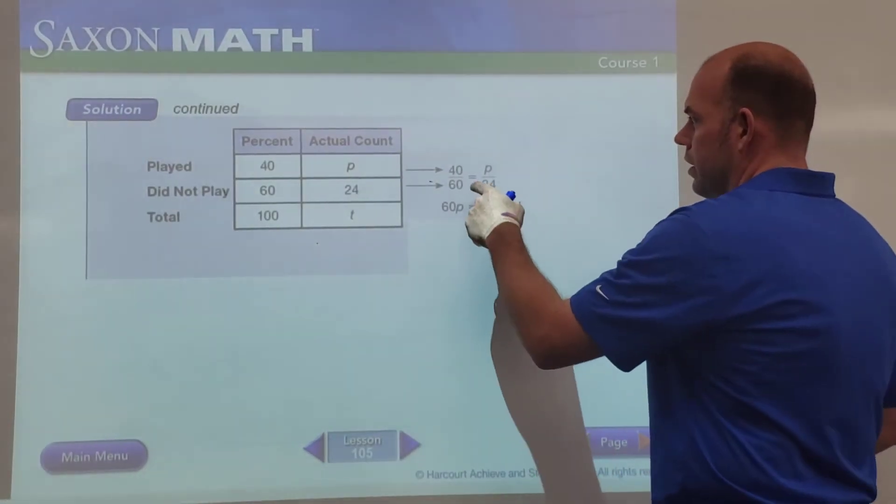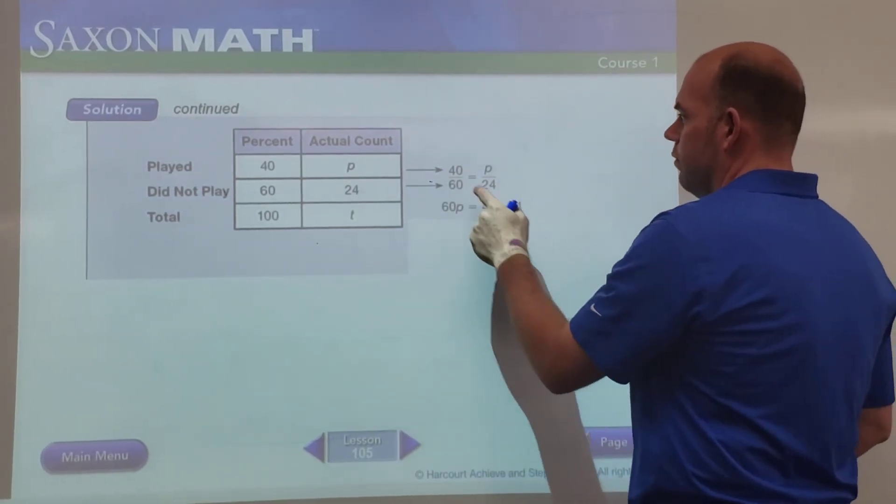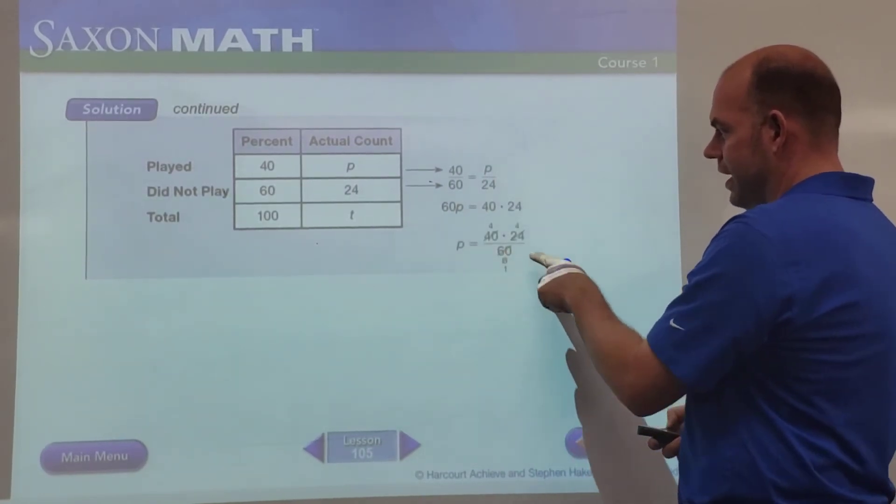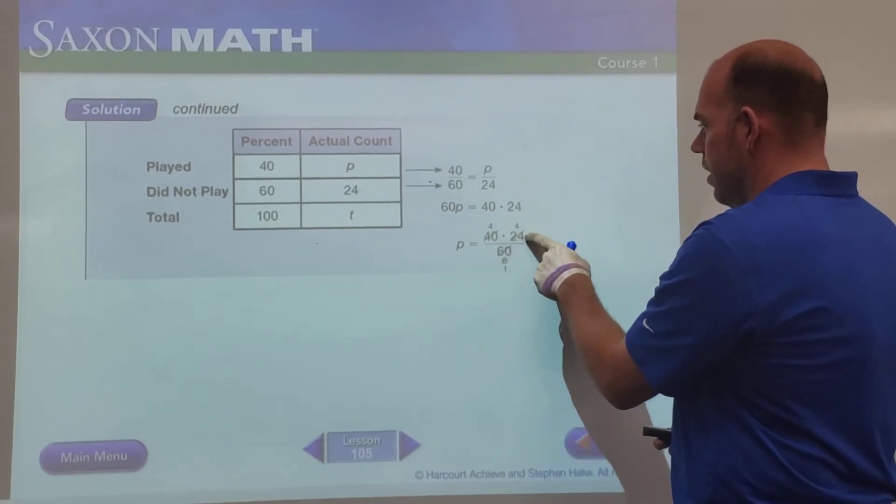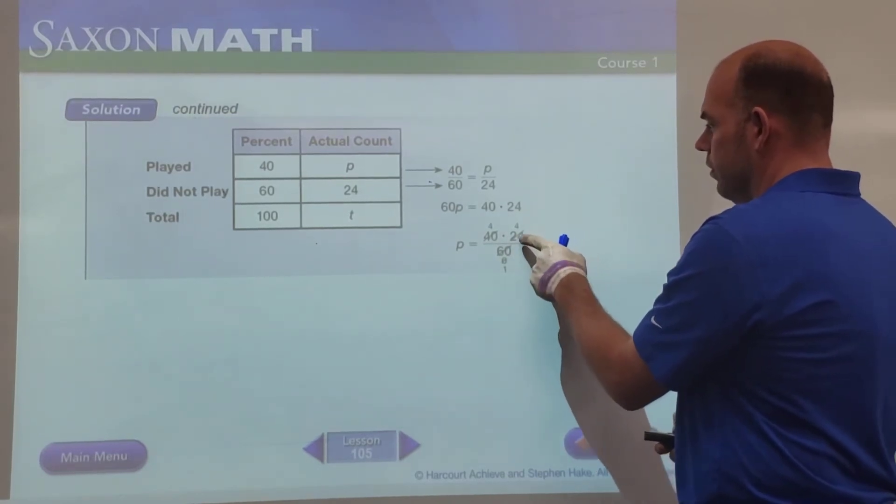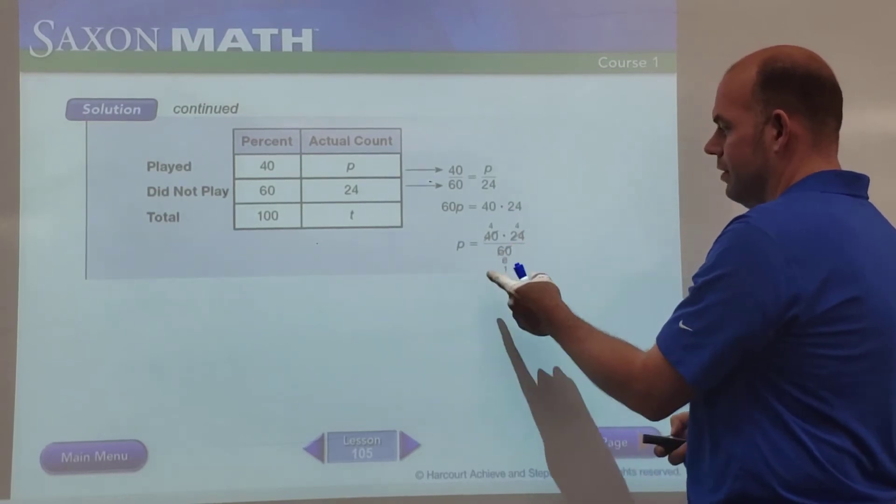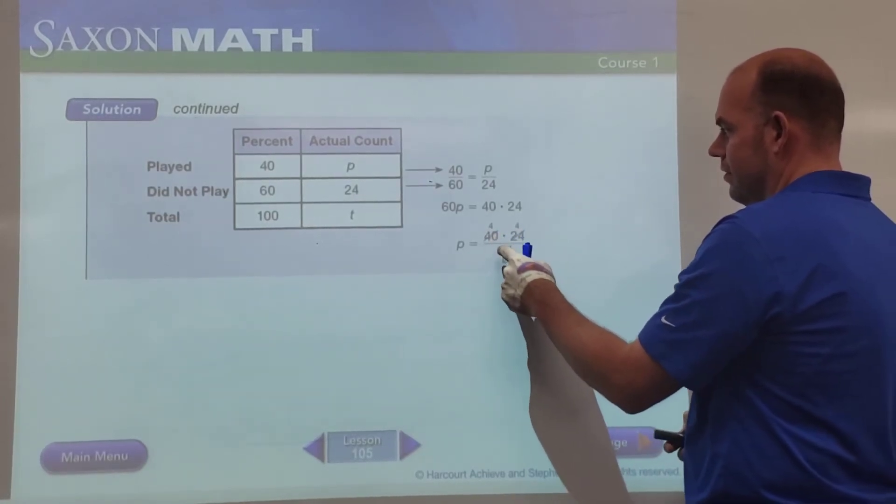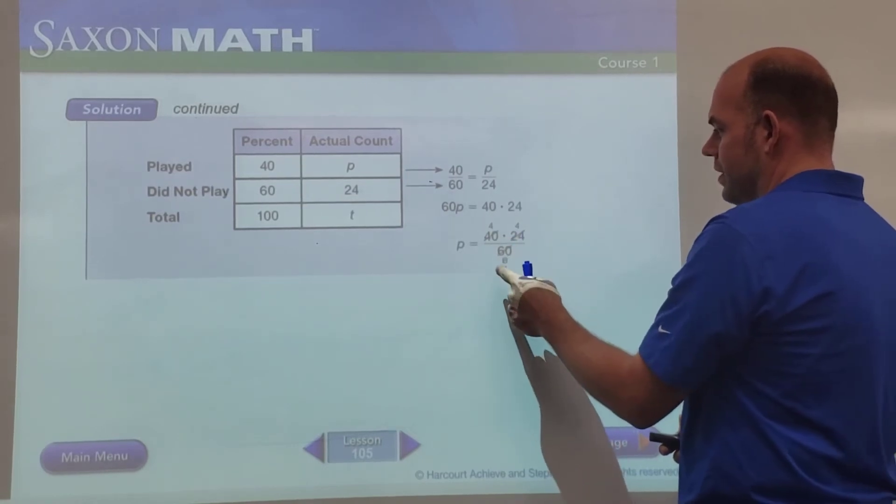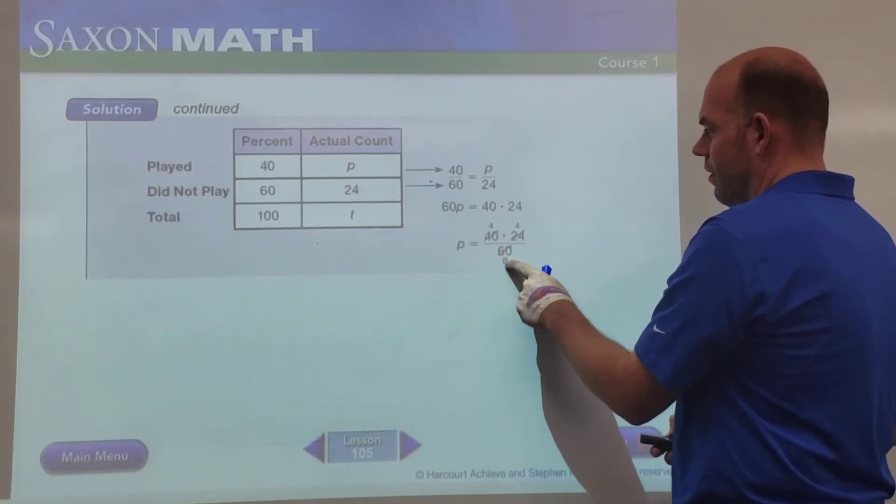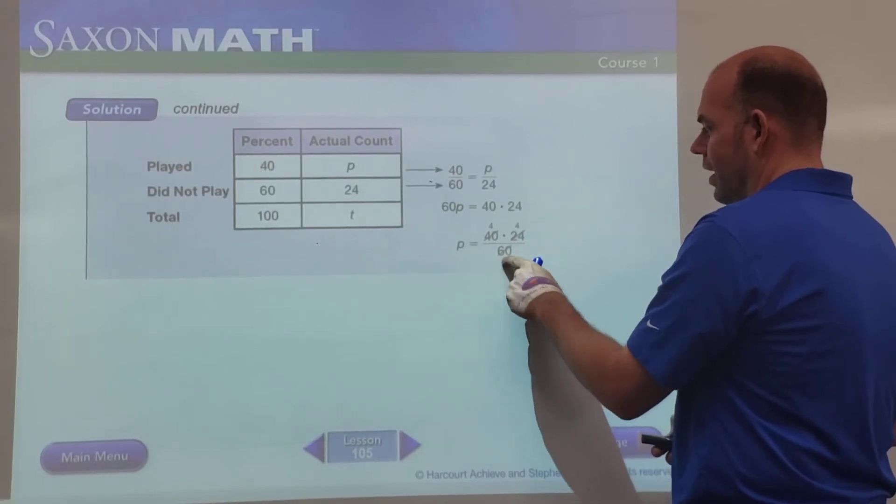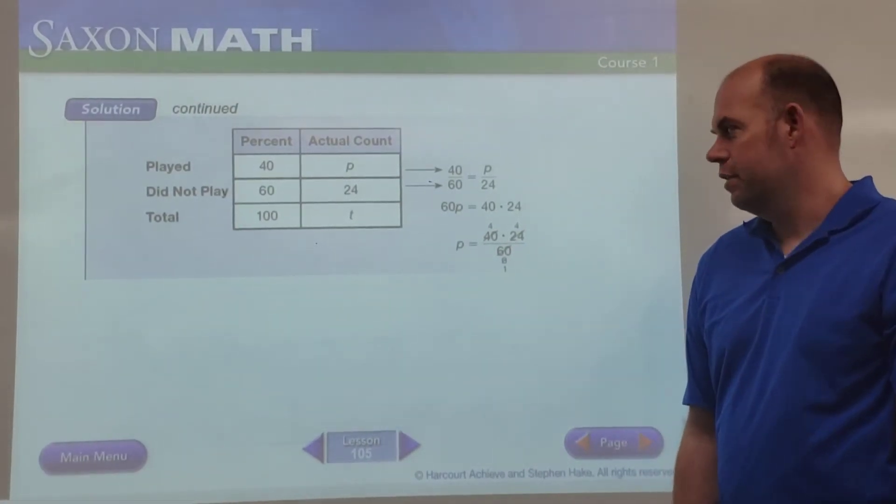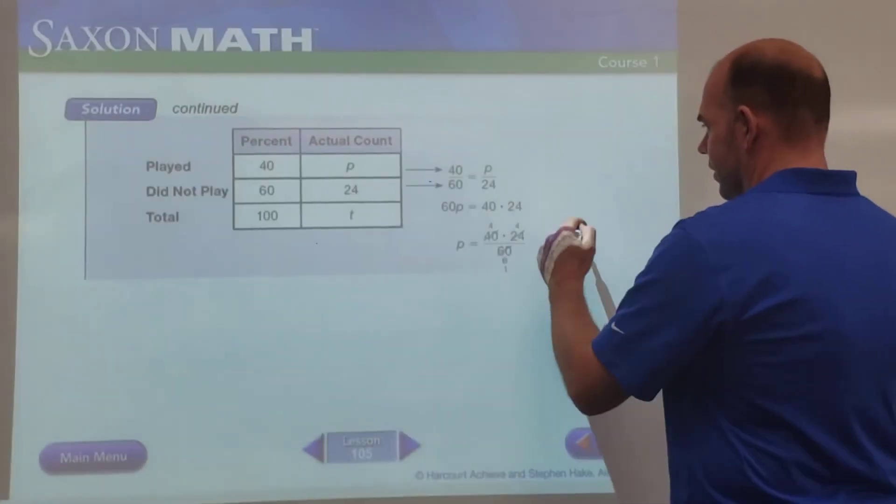So we'll solve this the same way using our cross multiplying. So 40 times 24—we'll just put that as 40 times 24—and 60 times p. So now we need to divide these by 60, so we'll divide by 60 and take out our common factors. A common factor here of 24 and 60 is 6, so we'll divide by 6. That gives us—60 divided by 10 is 6, then they did this side. If we have what's left is 6, we'll divide by 6 to get 1, and 24 divided by 6 is 4. I don't know why they do it that way; it seems really hard and complicated to me.